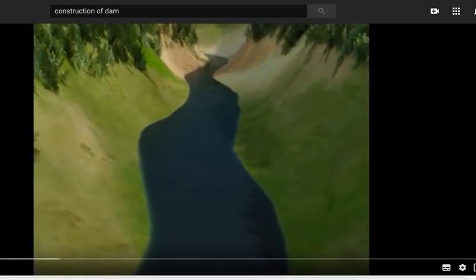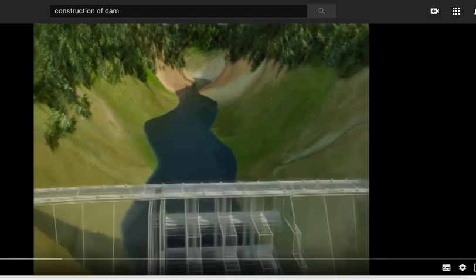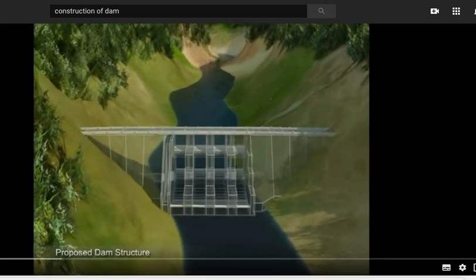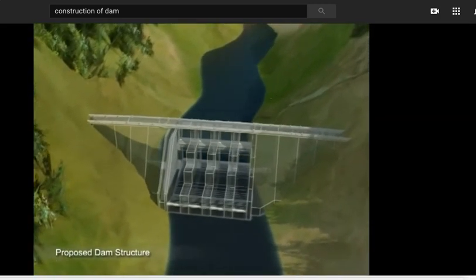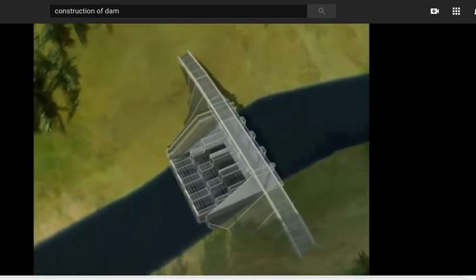The dam is situated across the Ravi River near village Bajoli in Himachal Pradesh. Here we can see the terrain and location of the dam. Let us take you through the process of constructing the dam.